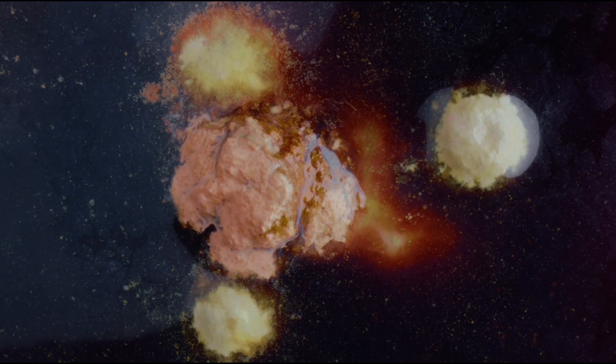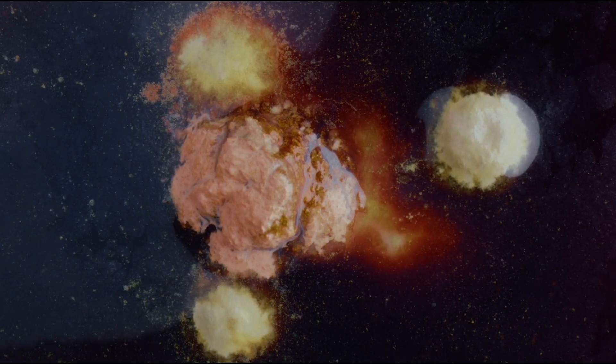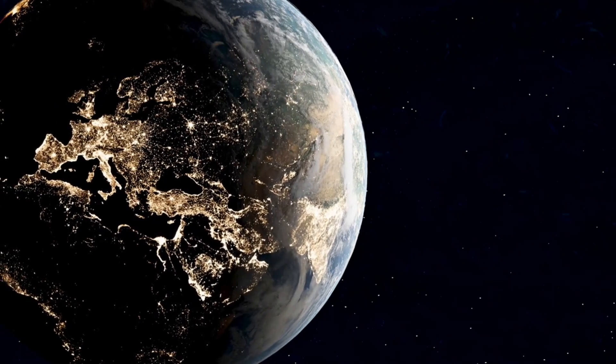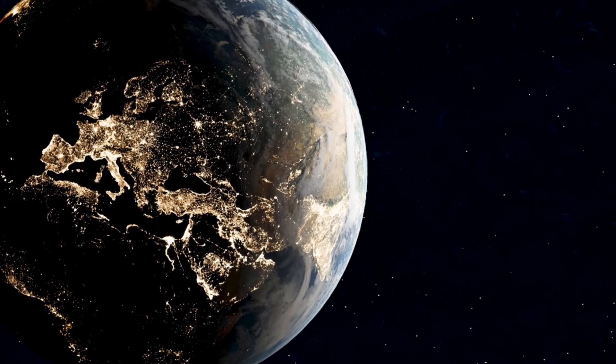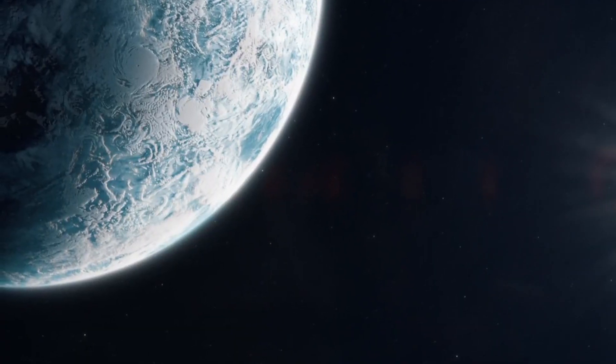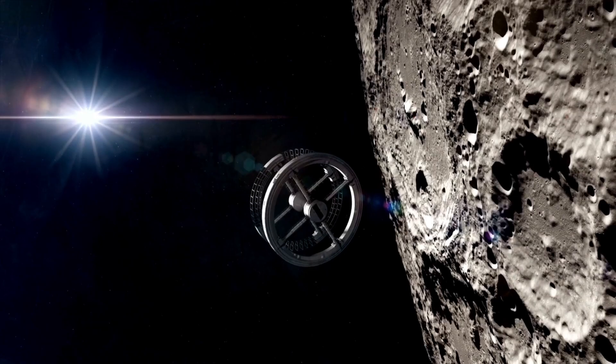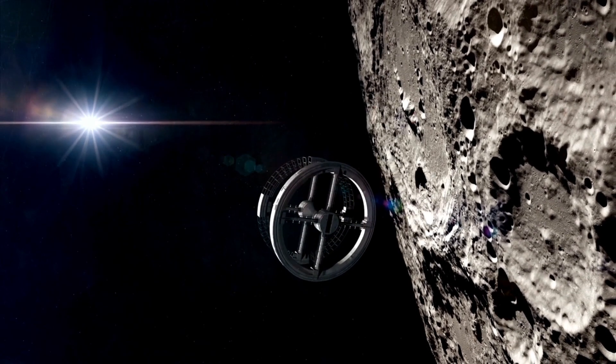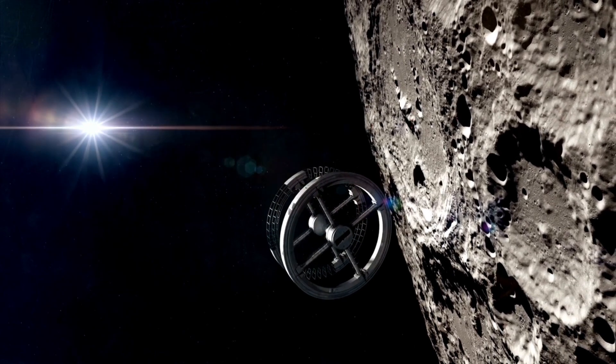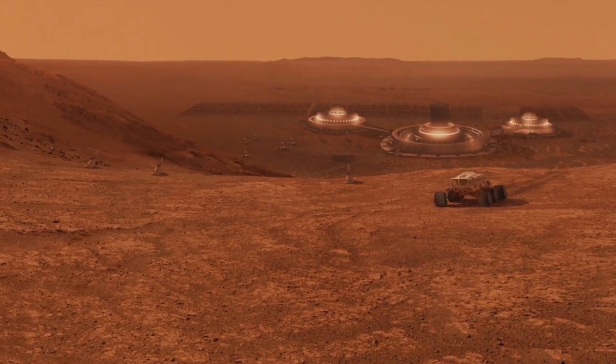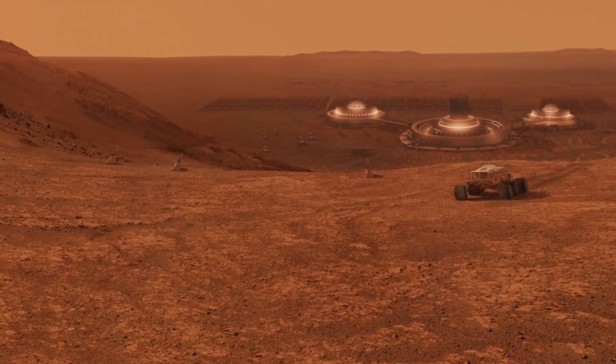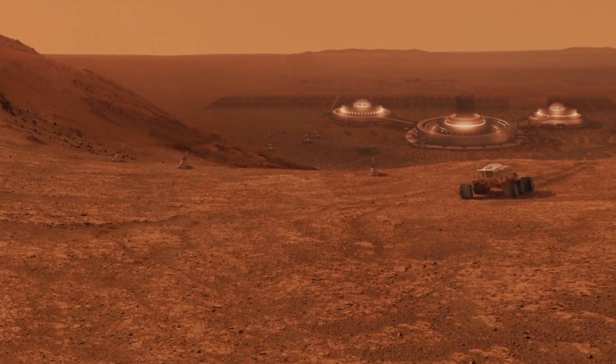This movement creates convection currents that transport energy outward, balancing the star's internal processes with its external luminosity. These currents also cause variations in brightness, which manifest as the pulsations observed from Earth.